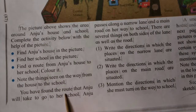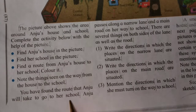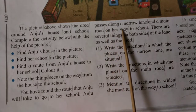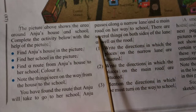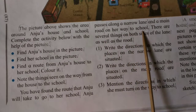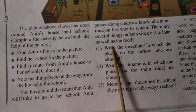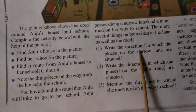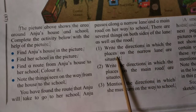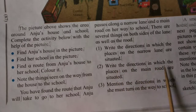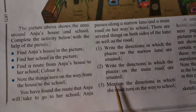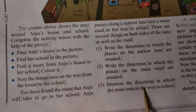You have found the route that Anju will take to go to school. Anju passes along a narrow lane and a main road on her way to school. There are several things on both sides of the lane as well as the road. Write the directions in which the places on the narrow lane are situated, the places on the main road are situated, and mention the directions in which she must turn on the way to school.